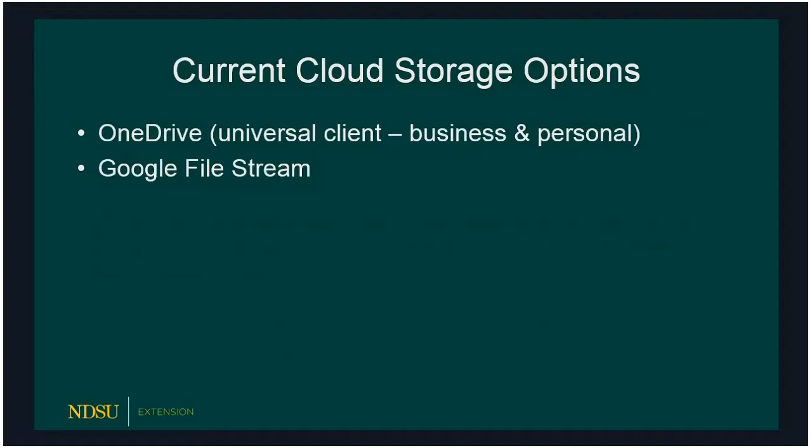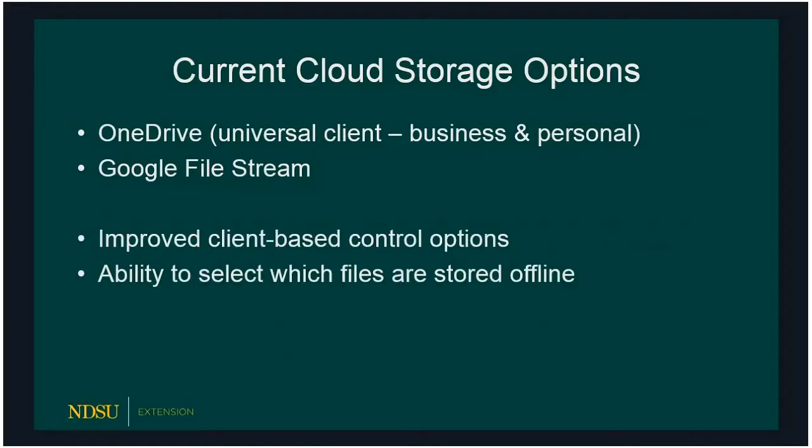OneDrive is now a universal client — instead of OneDrive personal and OneDrive for Business, they're all combined into just OneDrive. Google Drive has turned into Google File Stream. From your computer they'll work exactly the same as always, with just a couple of additions. You now have improved client-based control options — the ability to share files with specific people or generate links right from your desktop without logging into the web. You can also select which files are kept on your machine and which are kept in the cloud, so you only pull down the files you're going to work on.